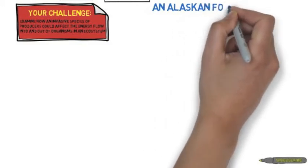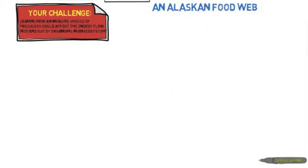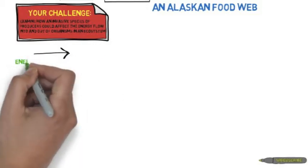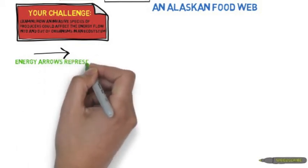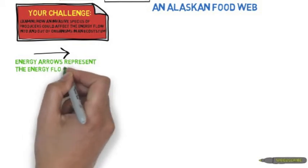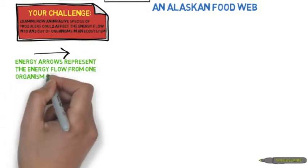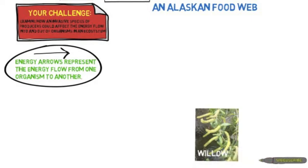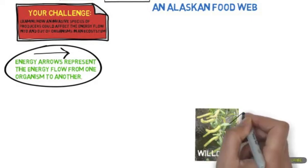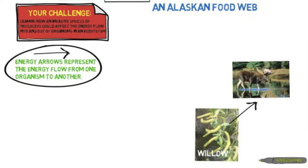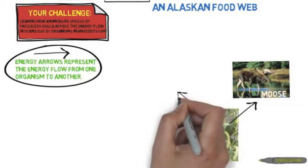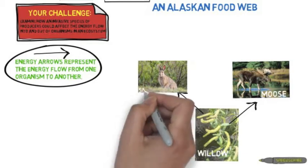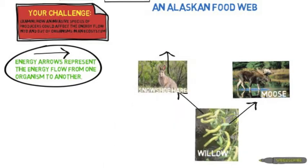Let's examine an ecosystem in Alaska and look at a food web. In a food web there are arrows called energy arrows, which represent the flow of energy from one organism to another — we get energy from other organisms by consuming them. In Alaska there is a producer called the willow. The willow is a native species and is a very important food source for the moose and also for the snowshoe hare.